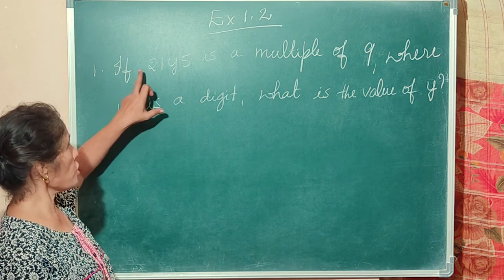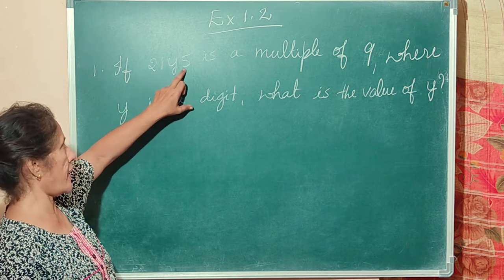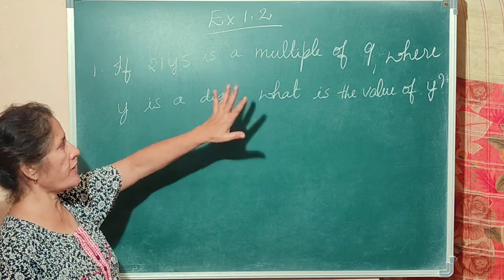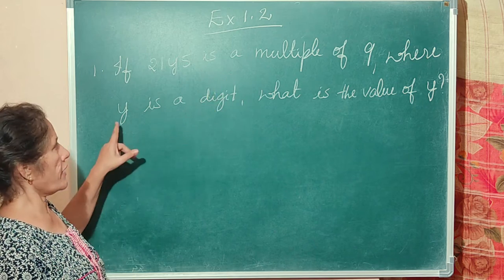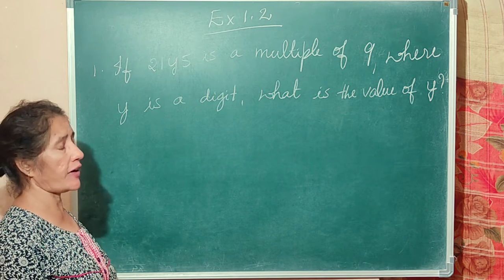Question A: 21y5 is a multiple of 9, where y is a digit. What is the value of y?